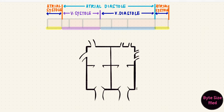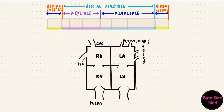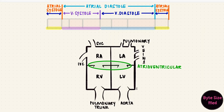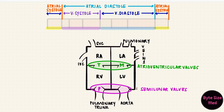To understand what happens, I'm going to be using this schematic heart with the right atrium, the left atrium, the right ventricle, and the left ventricle. The superior and inferior vena cava open into the right atrium and the pulmonary veins into the left atrium. The pulmonary trunk emerges from the right ventricle and the aorta from the left ventricle. Between the atria and the ventricles are the atrioventricular valves — the tricuspid valve on the right and the mitral valve on the left. Between the ventricles and the two big vessels are the semilunar valves: the pulmonary valve and the aortic valve.